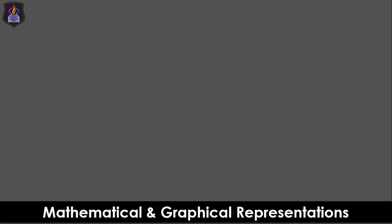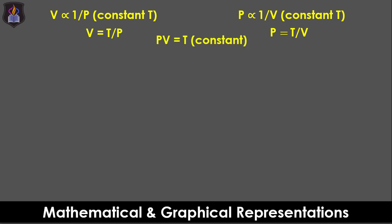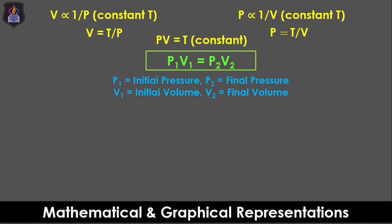Mathematically, Boyle's law can be expressed as V ∝ 1/P at constant T, or P ∝ 1/V at constant T. If we evaluate these expressions by removing the sign of proportionality and introducing a proportionality constant which is temperature in this case, we obtain V = T/P or P = T/V. Given that the product of P and V is constant, then at two different conditions, P₁V₁ = P₂V₂, where P₁ and P₂ are the initial and final pressures respectively and V₁ and V₂ are the initial and final volumes respectively.